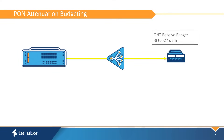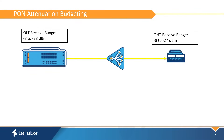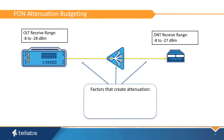Equipment standards for PON establish the fiber signal receive range for the ONT and OLT transceivers. This is between -8 and -27 dBm downstream and -8 to -28 dBm upstream. Since the optical LAN system is passive on the ODN, care must be taken to ensure that the planned deployment creates adequate attenuation so that the measured fiber signal falls within this range. Factors that create attenuation include the optical splitter, the distance between the OLT and ONT, fiber connectors, and splices. An understanding of the insertion loss created by these elements is critical to establishing a usable plan.